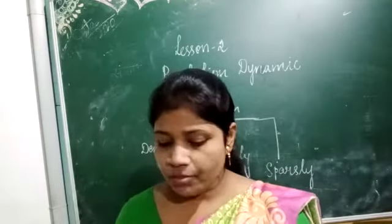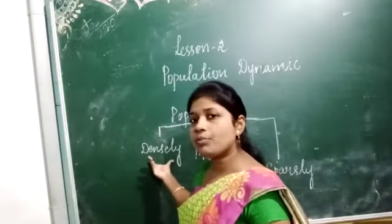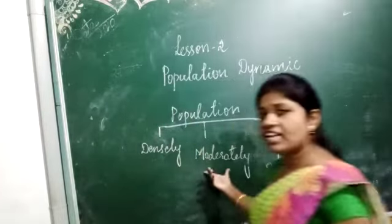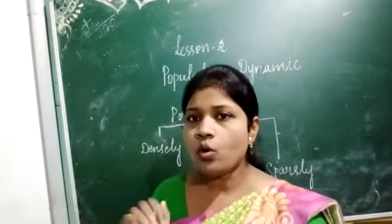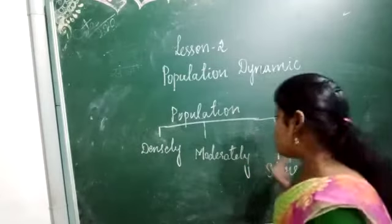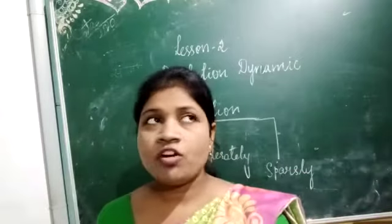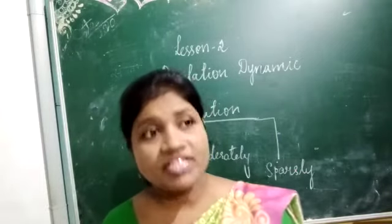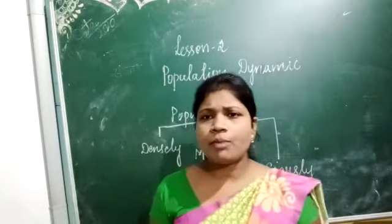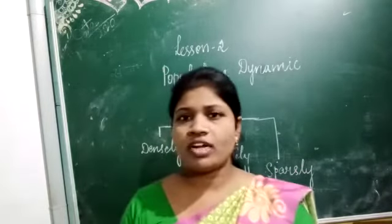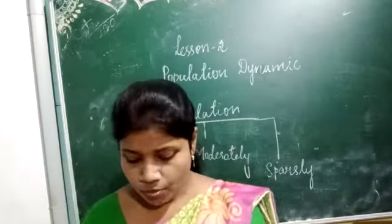The population will be more in the densely populated area. Moderately populated is neither too high nor too low. And then sparsely populated — due to the unsophisticated life, because in some places there are no facilities of water, food, or electricity, the population will be less. So those places are sparsely populated.